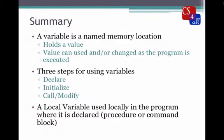In summary, a variable is a named memory location that holds a value. The value can be used and or changed as the program is executed. There are three steps for using variables: declare, initialize, and then call or modify.